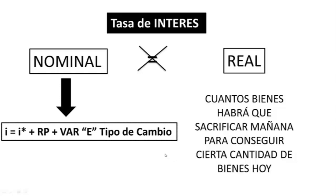i es la tasa de interés en pesos. i asterisco es el interés que paga un bono internacional de bajo riesgo, por ejemplo, la tasa de interés internacional de un país determinado, por ejemplo, Estados Unidos. RP es el riesgo país que hoy en Argentina está por las nubes y variación E, tipo de cambio, es la tasa de variación esperada en el tipo de cambio de un determinado país.